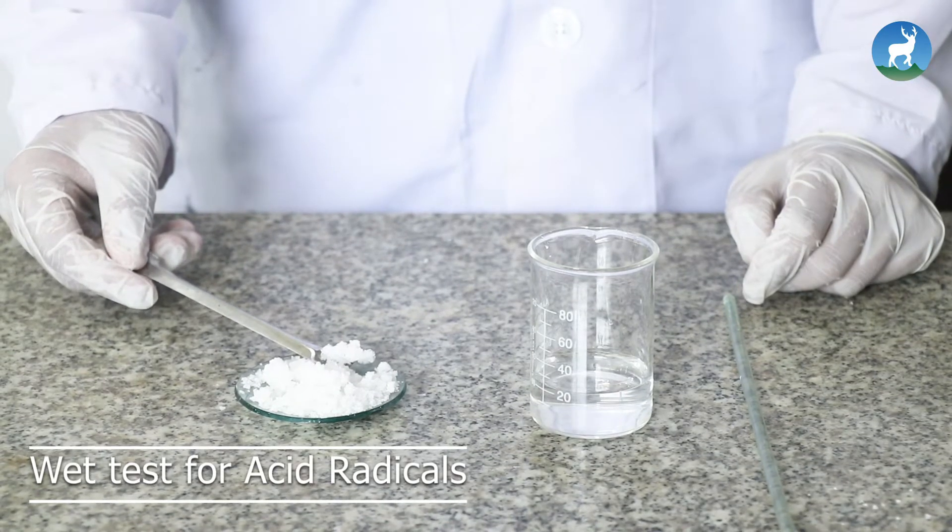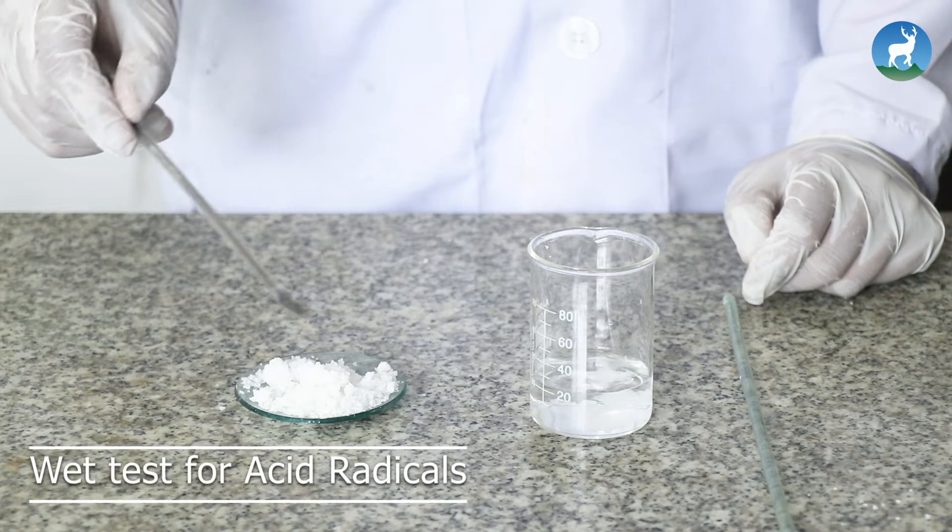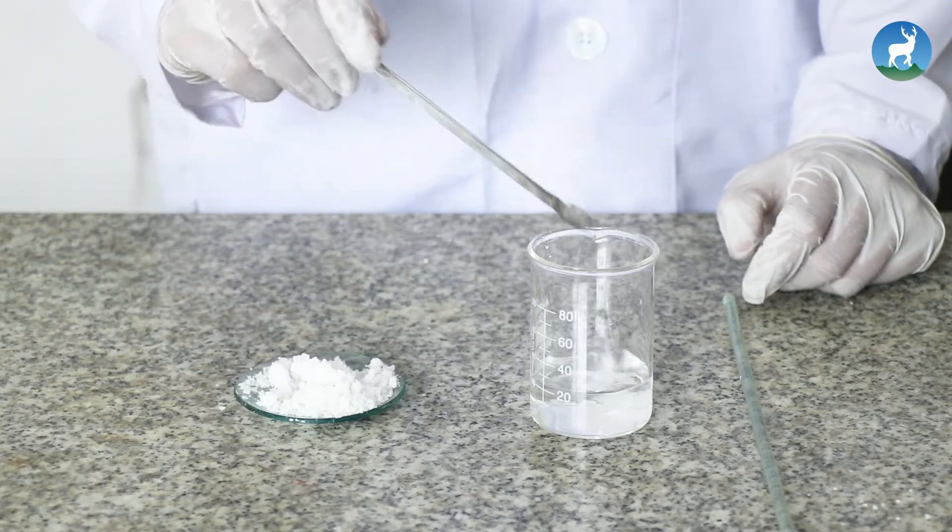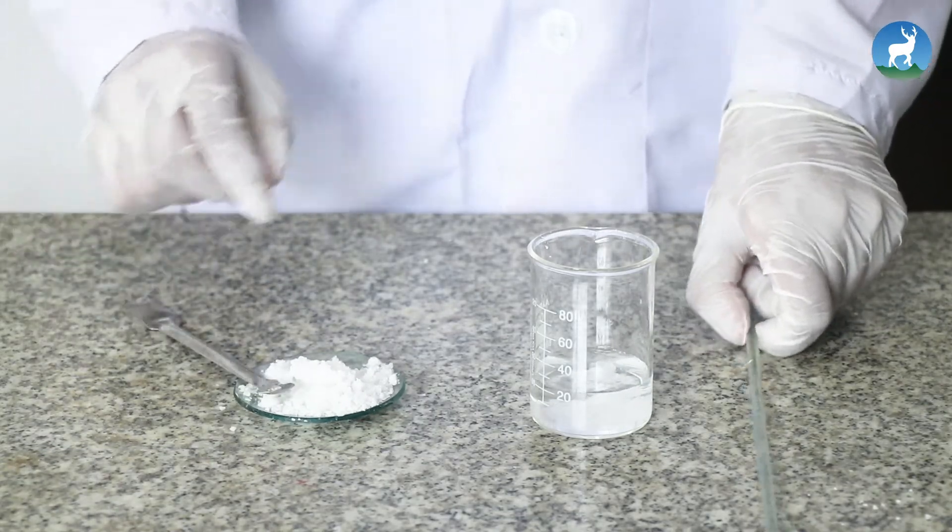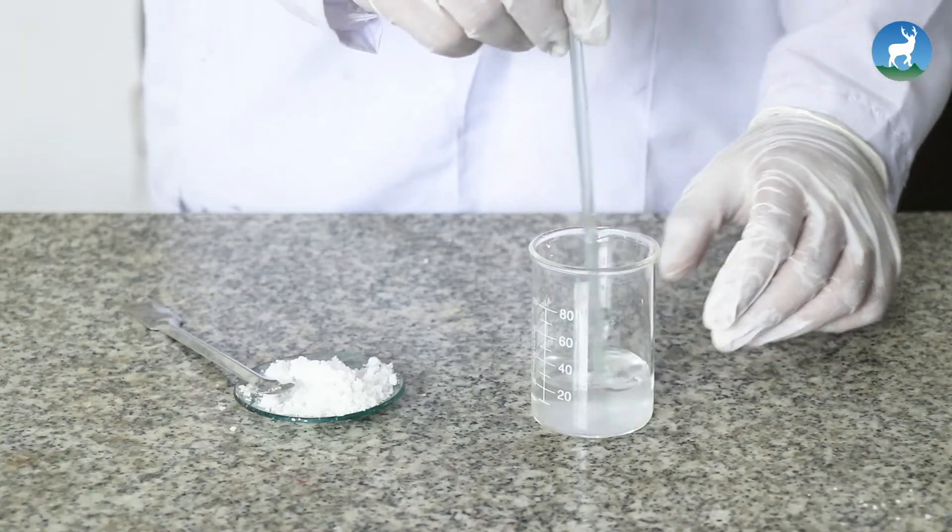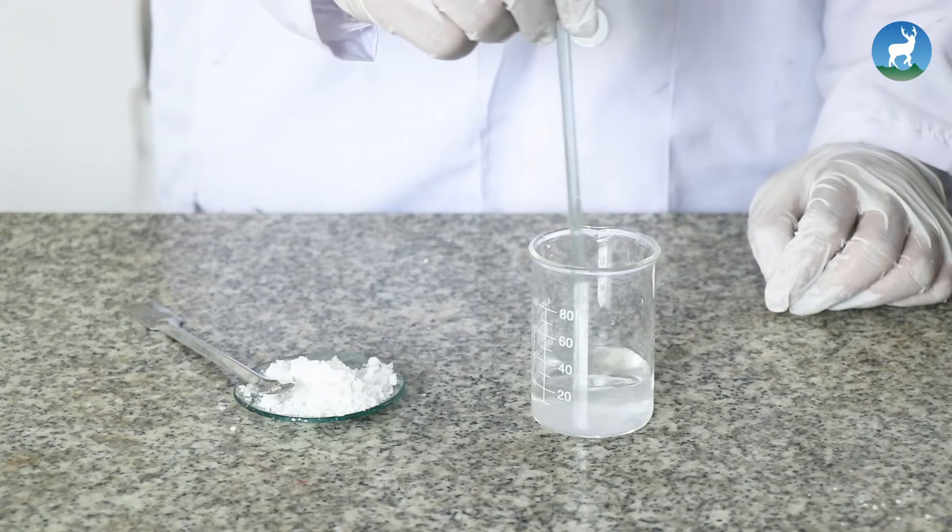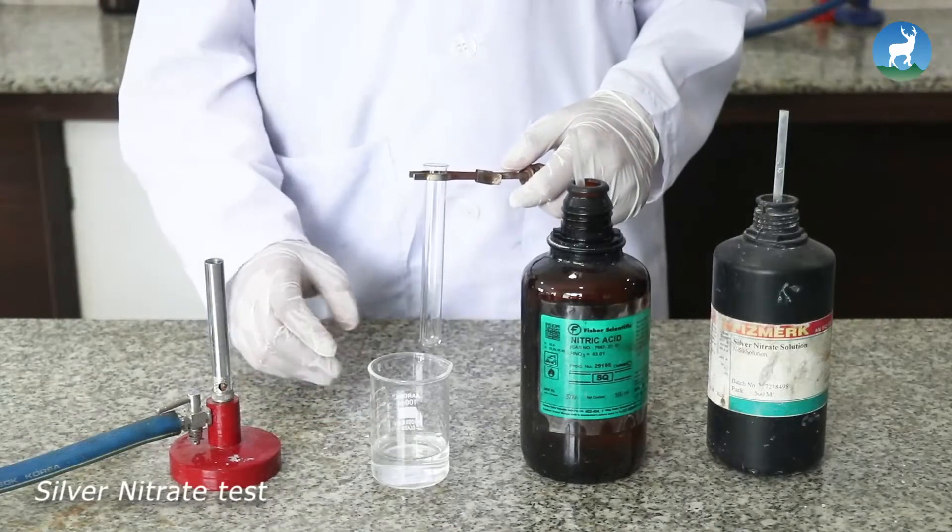Wet test for acid radical. First, the original solution is prepared by dissolving little amount of the given salt sample into suitable solvent like water. Silver nitrate test: